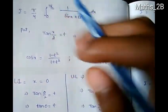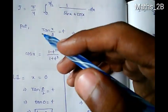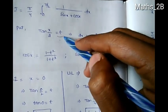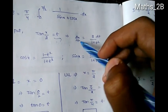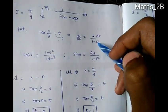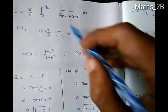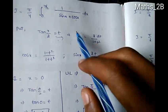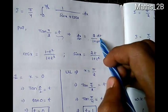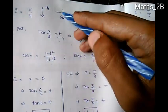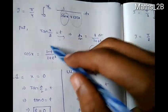Now for the integral of 1 divided by (sin x + cos x), we use the substitution tan(x/2) = t. Then dx equals 2 dt divided by (1 + t²), cos x equals (1 minus t²) divided by (1 + t²), and sin x equals 2t divided by (1 + t²).